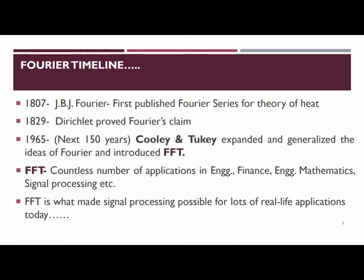If you look at the Fourier timeline, in 1807 Fourier first published Fourier series for theory of heat. Thereafter his work was supported by Dirichlet conditions, and in the year 1965 Cooley and Tukey expanded and generalized the ideas as proposed by Fourier and introduced the concept of fast Fourier transform.